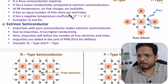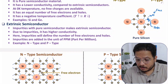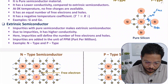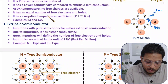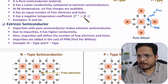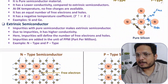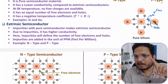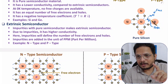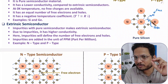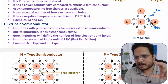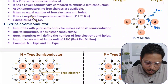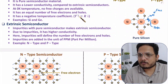At zero Kelvin there are no free charge carriers, but as you increase temperature, free charge carriers get generated. The material has equal numbers of free electrons and holes, because all electrons are in covalent bonds — if one electron becomes free, one hole is created. Electrons carry negative charge and holes carry positive charge, so equal numbers of holes and electrons are present.